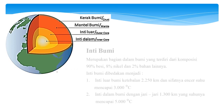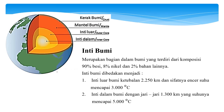Lapisan bumi yang selanjutnya adalah inti bumi. Inti bumi merupakan bagian dalam bumi berupa material cair dengan komposisi 90% besi, 8% nikel, dan 2% bahan lainnya. Inti bumi dibedakan menjadi dua, yaitu inti luar bumi dengan ketebalan 2.250 km yang sifatnya encer dan suhunya mencapai 300 derajat Celsius. Kemudian inti dalam bumi dengan jari-jari 1.300 km yang suhunya mencapai 5.000 derajat Celsius.